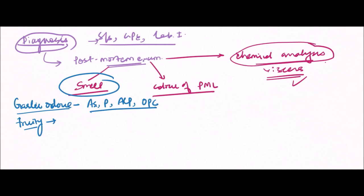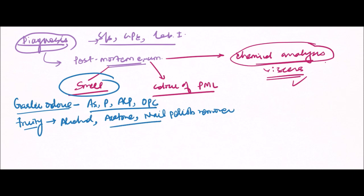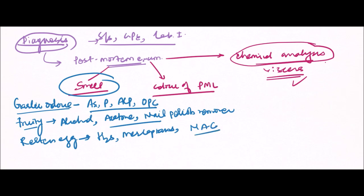The fruity odor is the smell of alcohol, acetone, and nail polish remover. Then the smell like rotten egg — this smell is given by H2S, mercaptans, and N-acetyl cysteine.